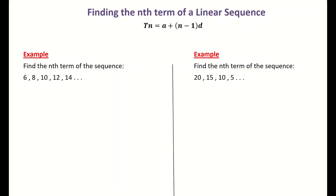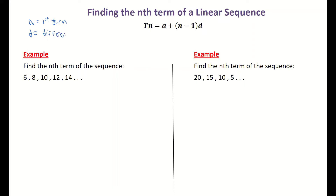We have a separate video for quadratic sequences, which go up in a second difference. We have a formula on page 22 in our formula tables: tn = a + (n − 1) × d. The 'a' stands for the first term in the sequence, 'n' remains in your formula unchanged, and 'd' stands for the difference between each term. So the two things to find before filling in the formula are 'a' and 'd'.